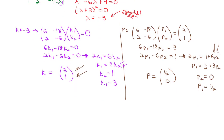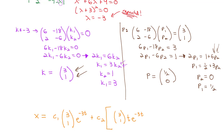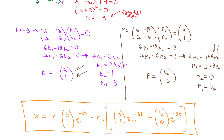Now we have all the pieces for the final solution. x equals c1 times eigenvector [3, 1] times e to the negative 3t, plus c2 times — here's the new linearly independent expression — eigenvector [3, 1] times t e to the negative 3t, plus p vector [1/2, 0] times e to the negative 3t. That's how repeated eigenvalues yield two linearly independent solutions.